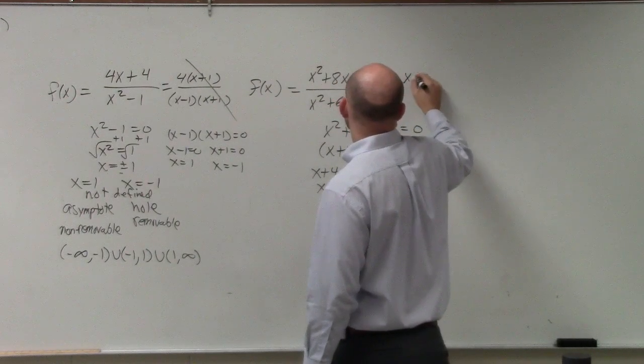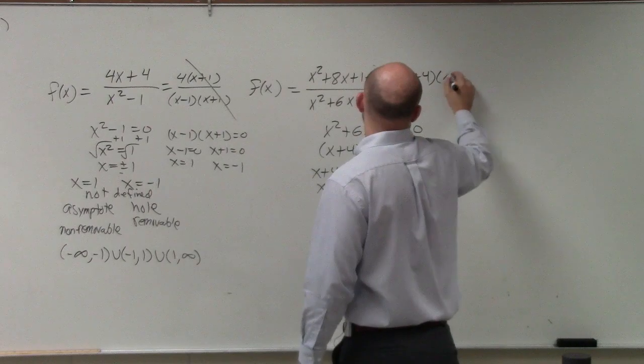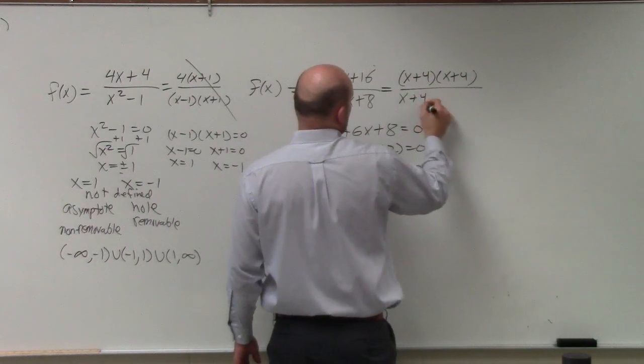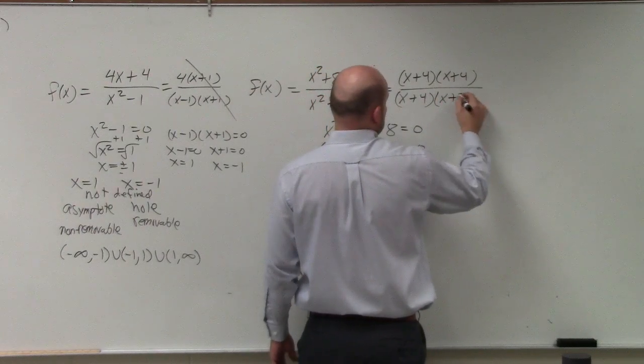So therefore, I have x plus 4 times x plus 4 divided by x plus 4 times x plus 2.